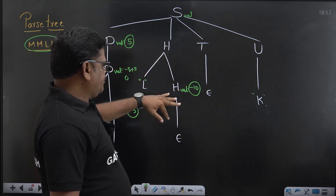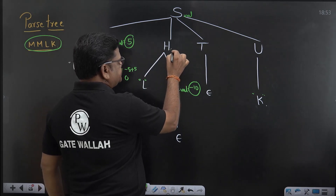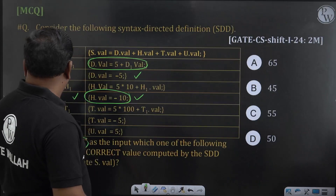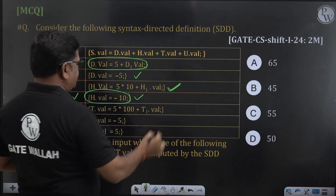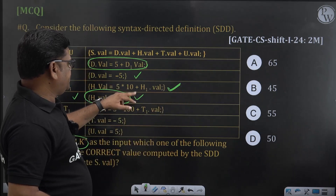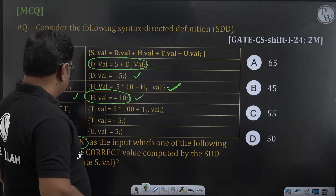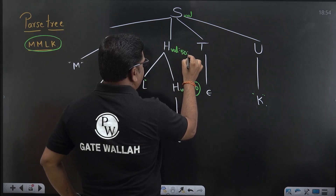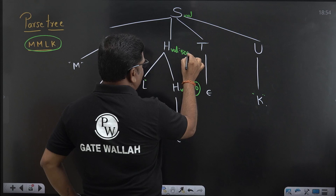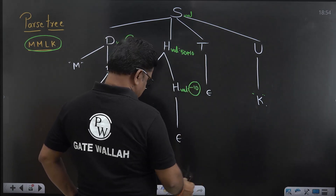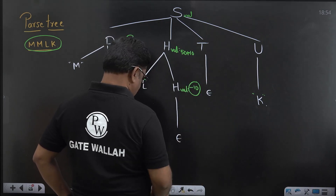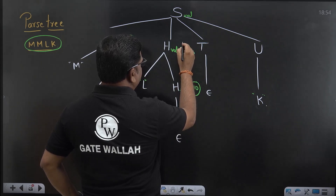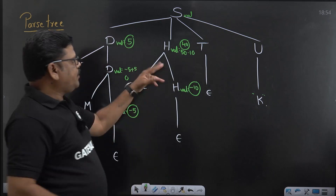Then for the production L → LH, whenever we use this rule: 5 times multiplied with 10 is 50, plus H1.val which is minus 10, giving 50 minus 10. That is nothing but 40. So here H.val is 40.